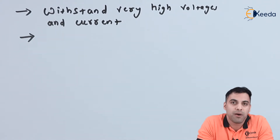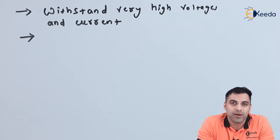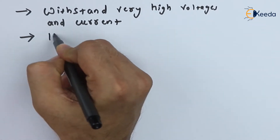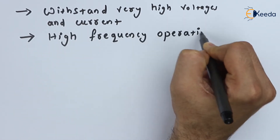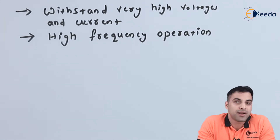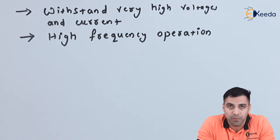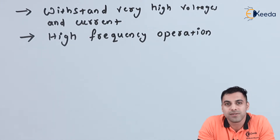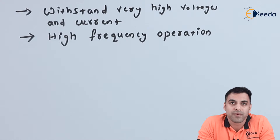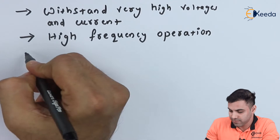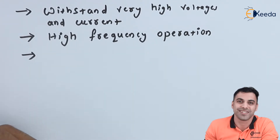The second advantage of a Power IGBT over a regular IGBT is that a Power IGBT can operate in very high frequency applications. If a power semiconductor device is operating in a high frequency application, that means the device should be very fast. A Power IGBT can operate in very high frequency operation — that's the reason it is very fast and has a very fast response.